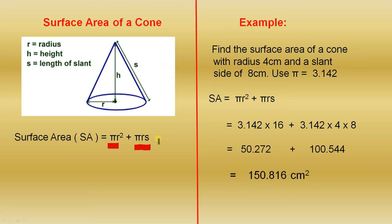For example, find the surface area of a cone with radius 4 centimeters and a slant side of 8 centimeters. Use pi equals 3.142. So when you see s here in the formula, that's the length of the slant side. So surface area is pi r squared plus pi r s, which is 3.142 times 16 because 4 squared is 16, plus 3.142 by 4 by 8. When you simplify all that, the answer is 150.816 square centimeters.